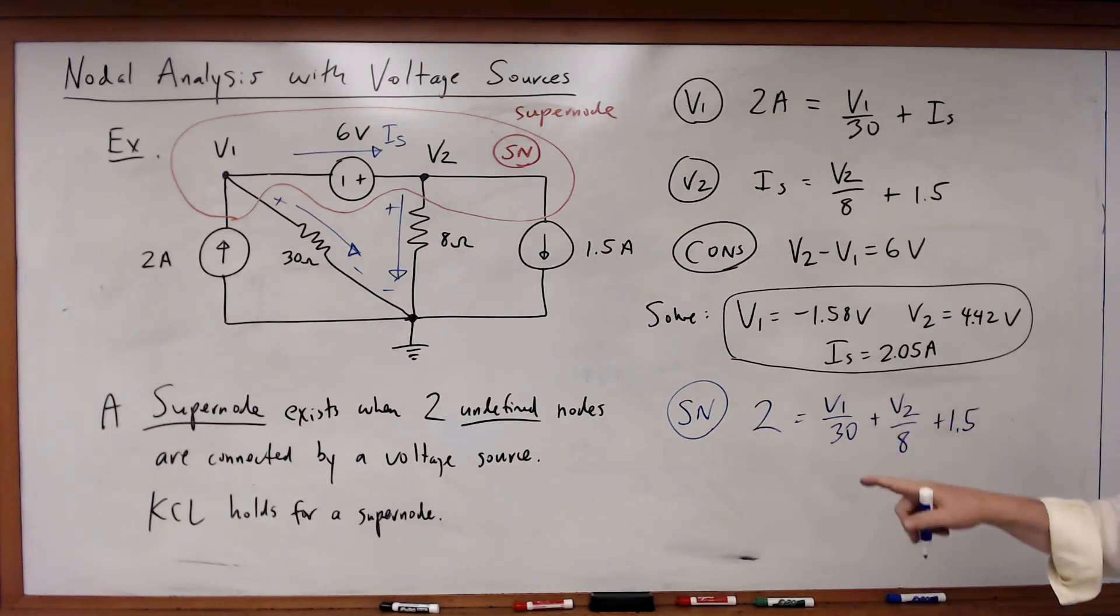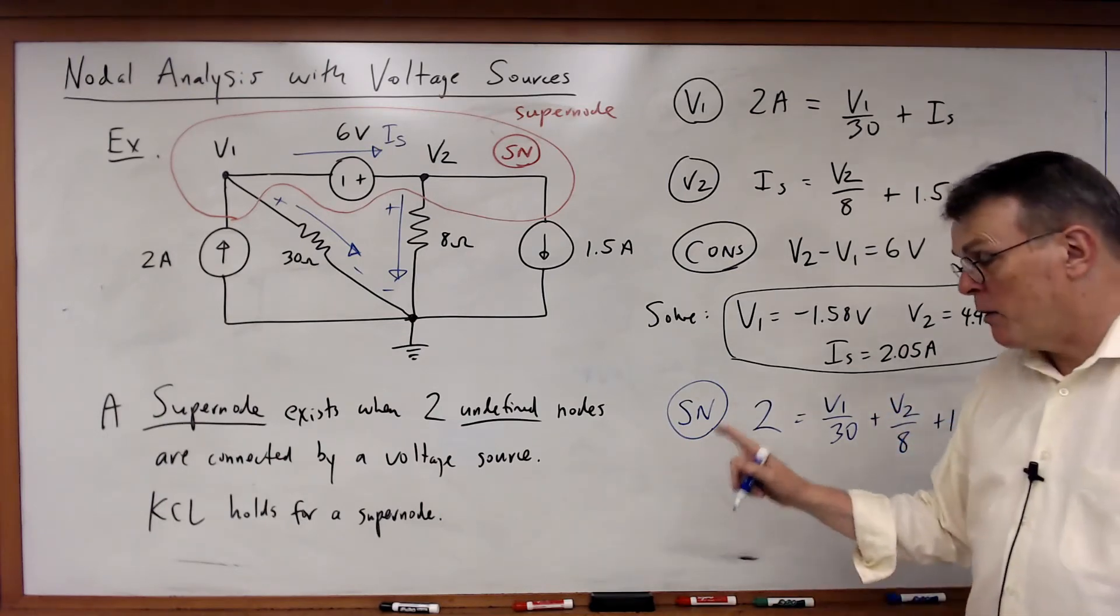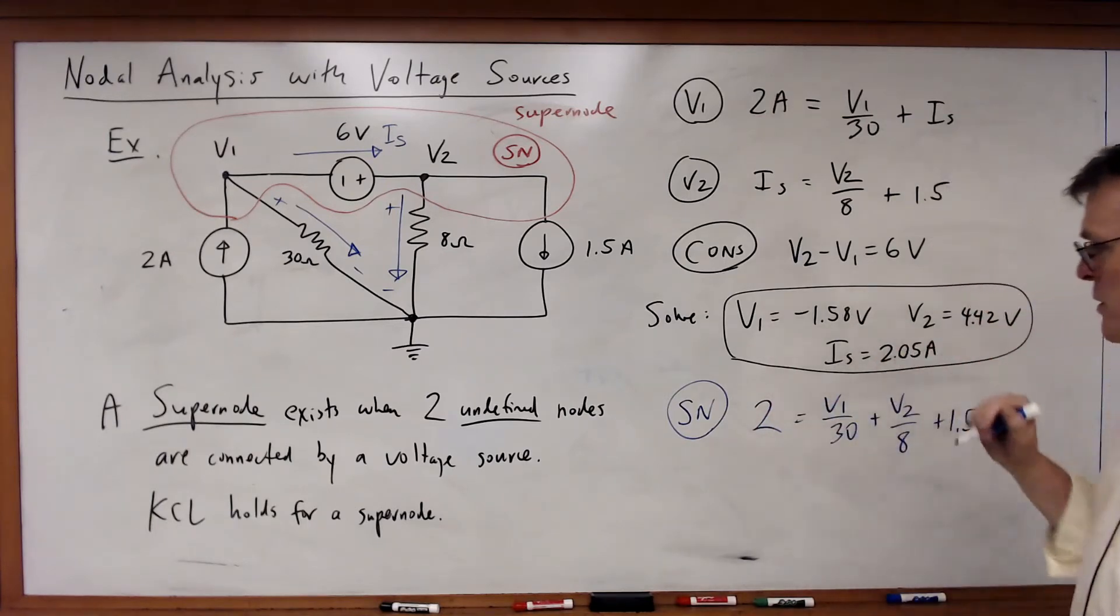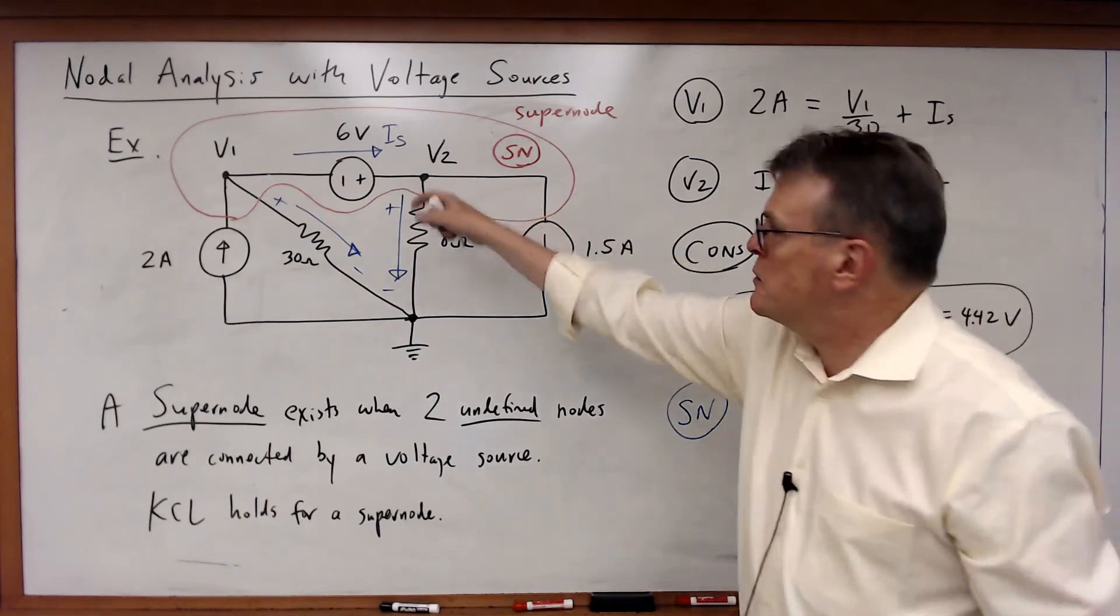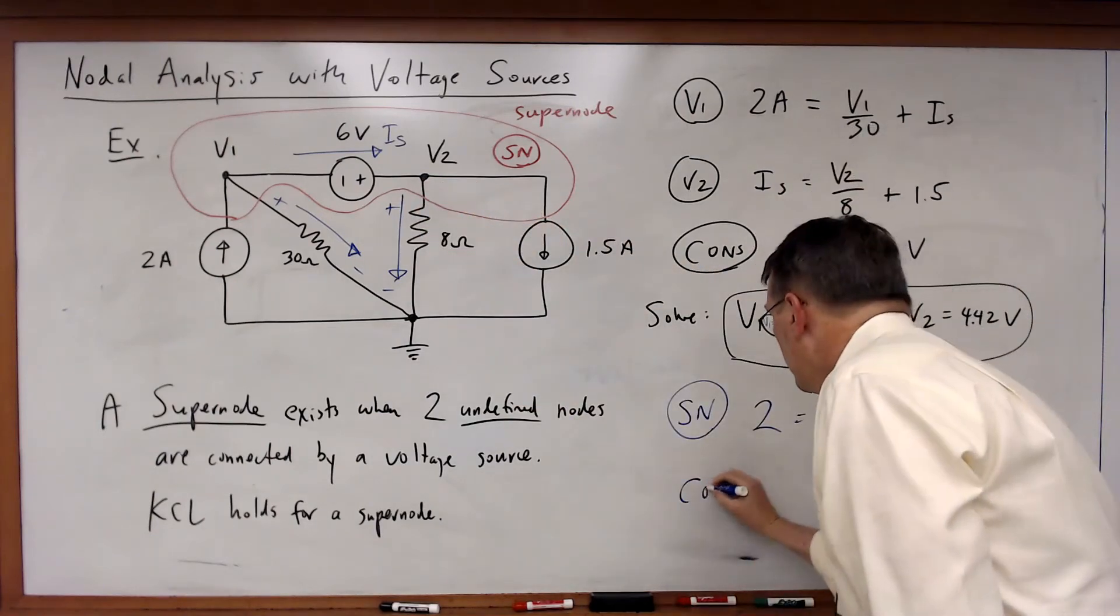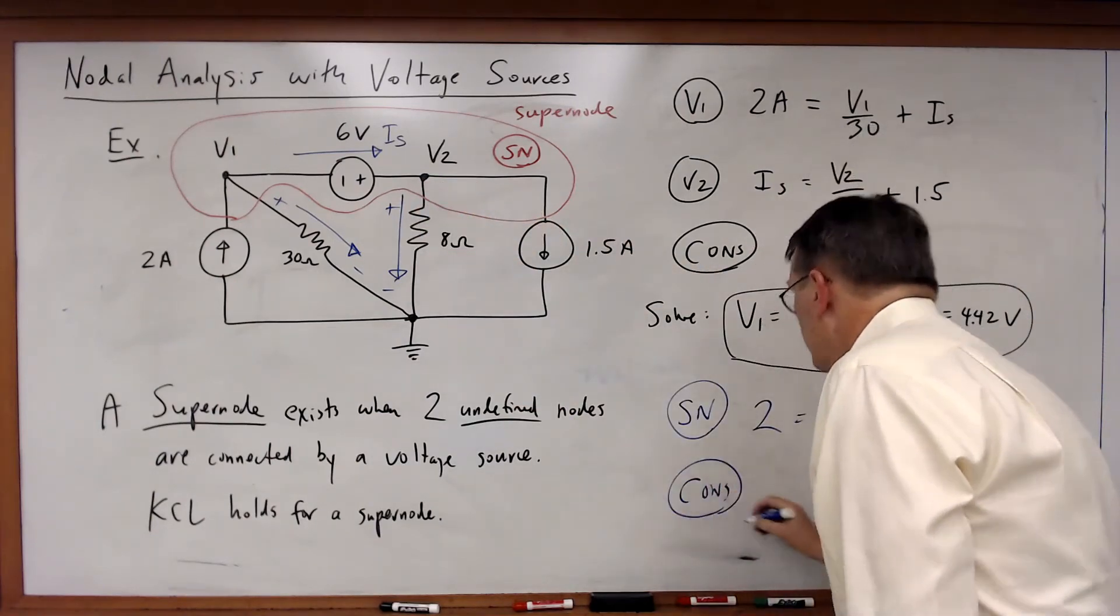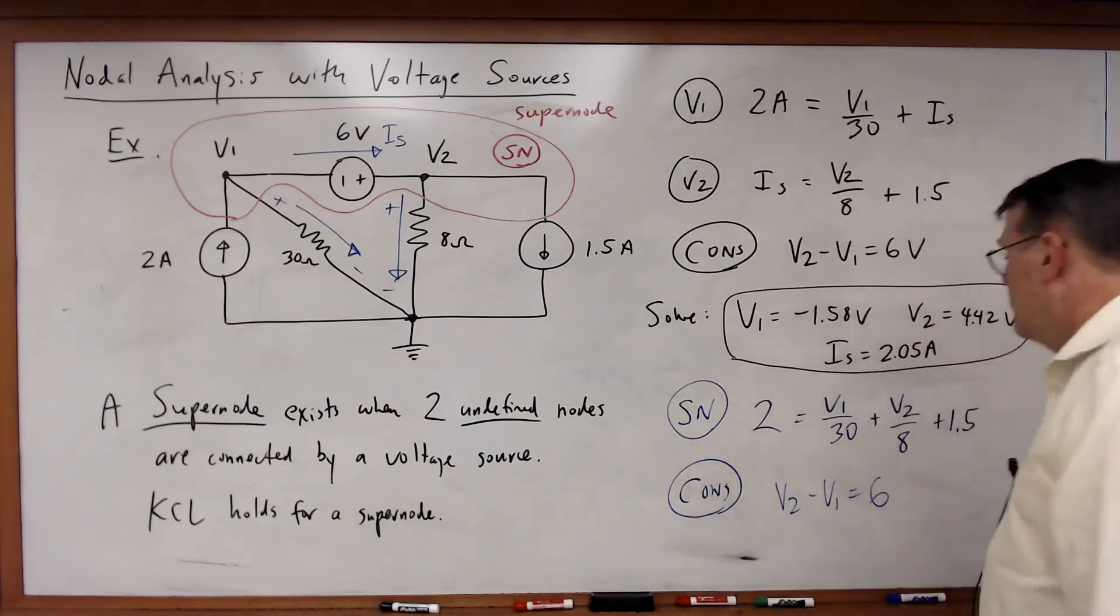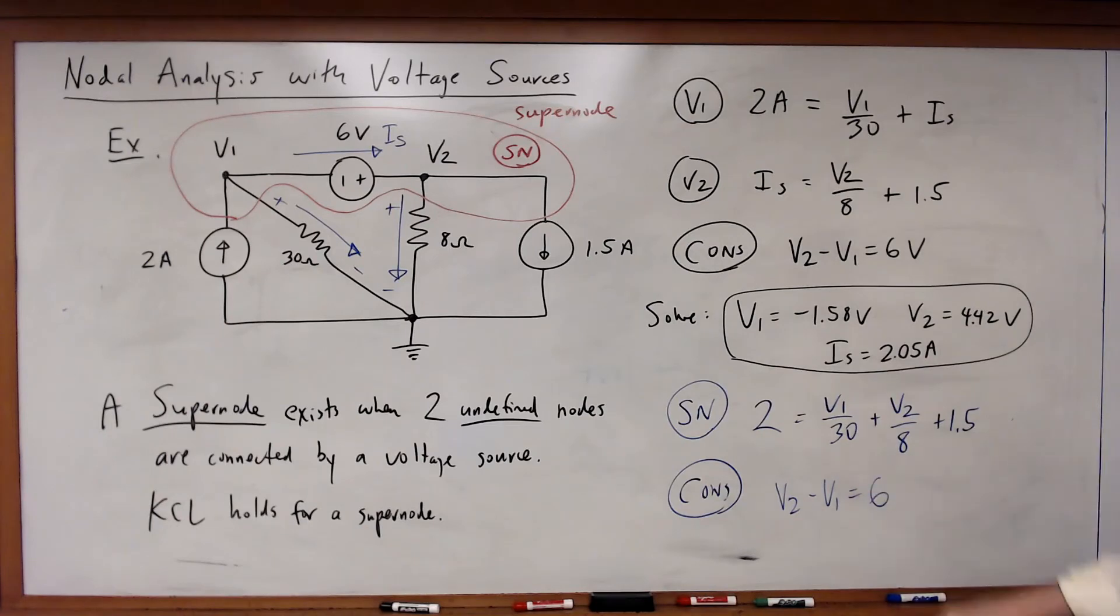There's my supernode equation. I've got one equation, two unknowns. Still need another equation. Well, I still need that constraint. The constraint says that V2 minus V1 is equal to 6. Two equations, two unknowns. I can now solve and I get the same answer for V1 and V2.